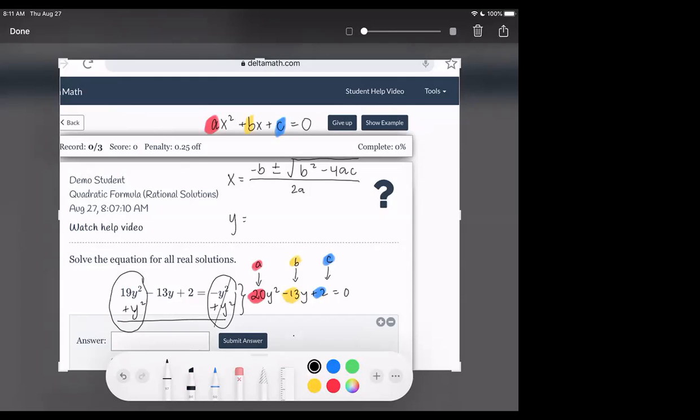so negative, and then our B value was negative 13, plus or minus the square root of B squared, so negative 13 squared, minus 4 times A, which was 20, times C, which is 2.